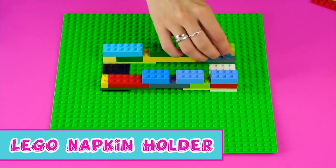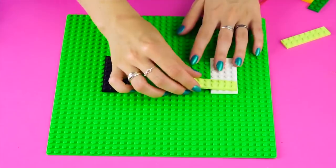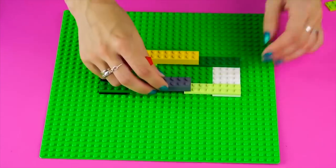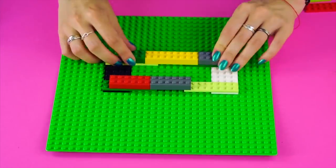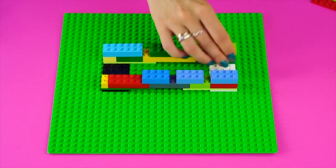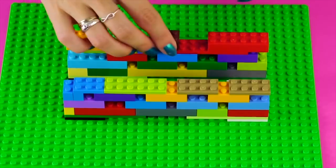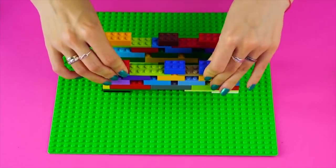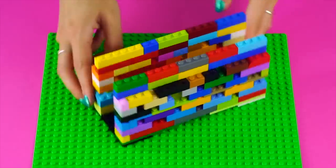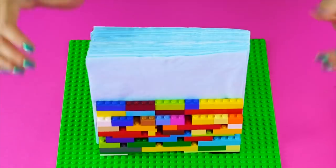Lego napkin holder. Here's a cool use for those leftover Legos. On a Lego base, add a few of the flat pieces like this. Add some of the narrow pieces along the outside. Grab some of the taller pieces to build up. On the next layer, leave space between the little blocks. Create your own design as you build up the napkin holder. Keep building. Use as many different colors and sizes as you want. Create a finished look at the top with these single layer Legos. Slide your napkins in and enjoy your beautiful masterpiece.